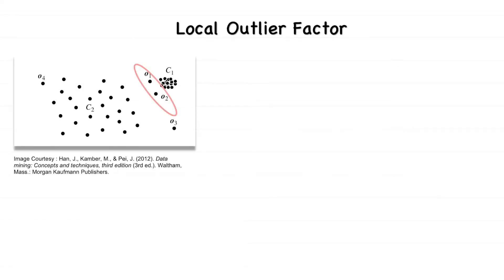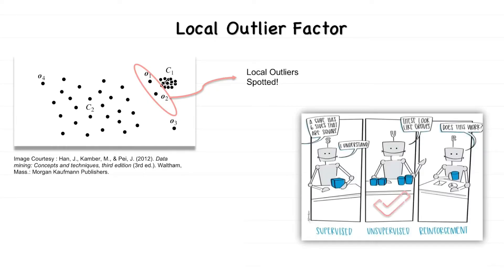The Local Outlier Factor algorithm is a density-based outlier detection technique which is useful in spotting local outliers. It is an unsupervised anomaly detection method. In this algorithm, basically every point is assigned a LOF score, that is a Local Outlier Factor score.